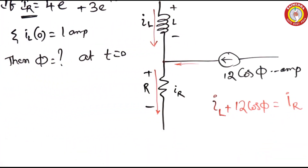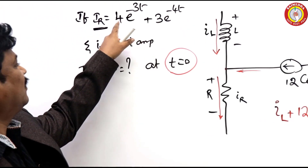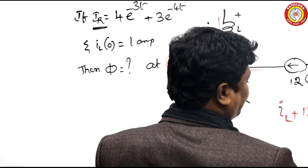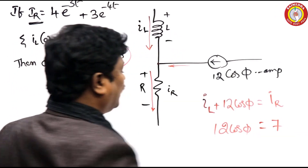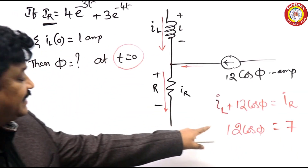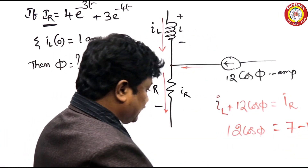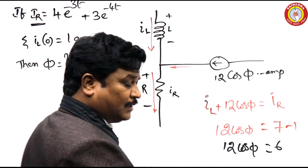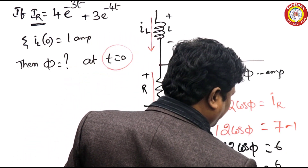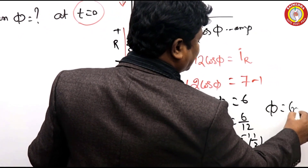That is the equation, but what is the condition given? At T equals 0, what is I_R at T equals 0? When you substitute T equals 0, this becomes 1, this becomes 1, so 4 plus 3 is 7 amperes. And 12·cos(φ): already I_L(0) is given as 1 ampere. If you bring this to the left side, it becomes minus 1 ampere. So 12·cos(φ) equals 6, cos(φ) equals 6/12, and φ equals cos⁻¹(1/2).